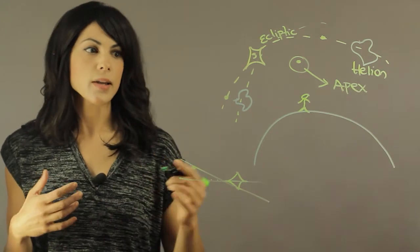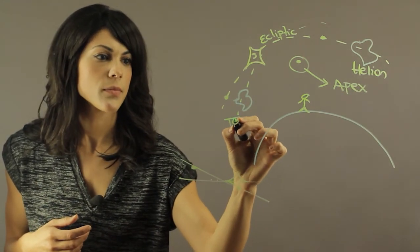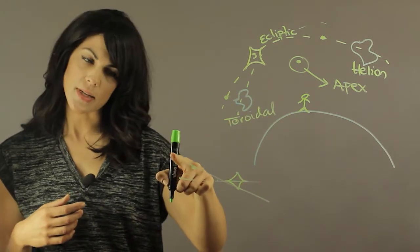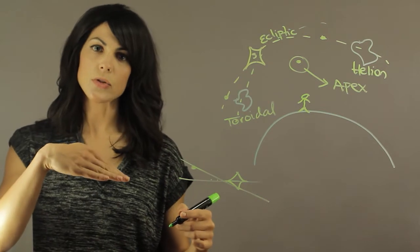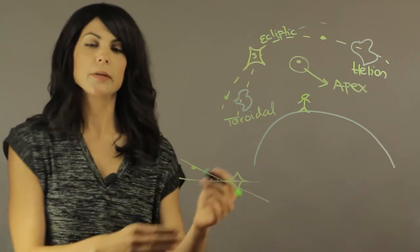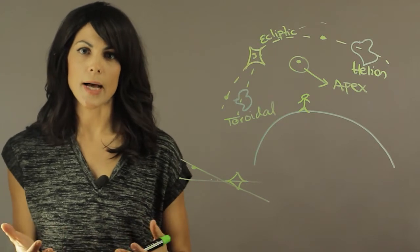And then the other one is the toroidal ones. And this has to do with debris. Just like I said, if it's inclined to the orbital plane of the Sun, they come from off the ecliptic and those are called the toroidal outbursts.